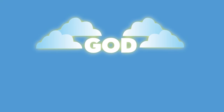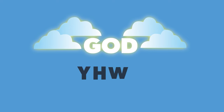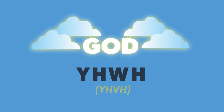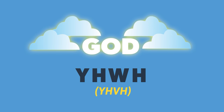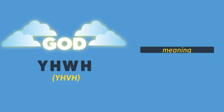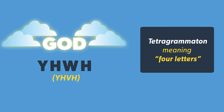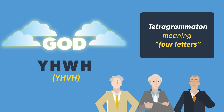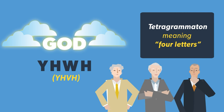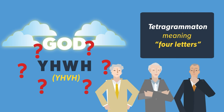In the original Hebrew, God's name transliterates to YHWH, sometimes written in the older style as YHVH. This is known as the Tetragrammaton, meaning four letters. Because of the lack of vowels, Bible scholars debate how the Tetragrammaton YHWH was pronounced.